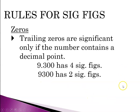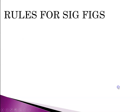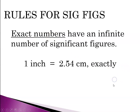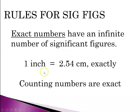So again, trailing zeros are only significant if the number contains a decimal point. Moving on to exact numbers: if I count the number of people in a classroom, that's an exact number and it has an infinite number of significant figures. Other examples include 1 inch equals 2.54 centimeters — that's an exact number with an infinite number of significant figures. Similarly, 12 inches equals 1 foot is an exact number, as are counting numbers like the number of pencils in a box or people in a room.